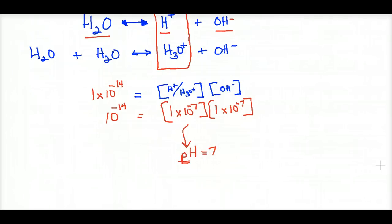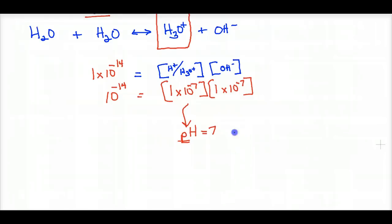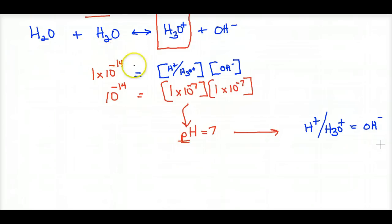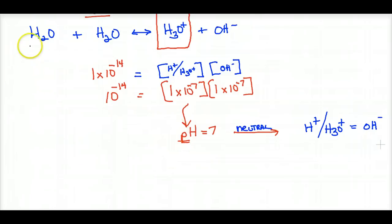A pH of 7 tells us that H⁺ equals OH⁻. If you don't have anything acidic or basic in the water — pure water — the pH has to be 7, and we call that a neutral pH. There's nothing influencing this ratio; it's a 1-to-1 ratio.